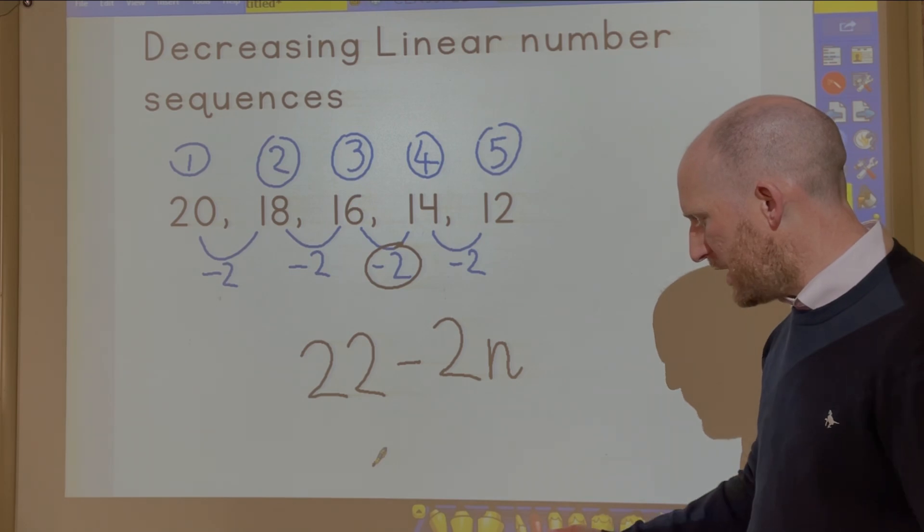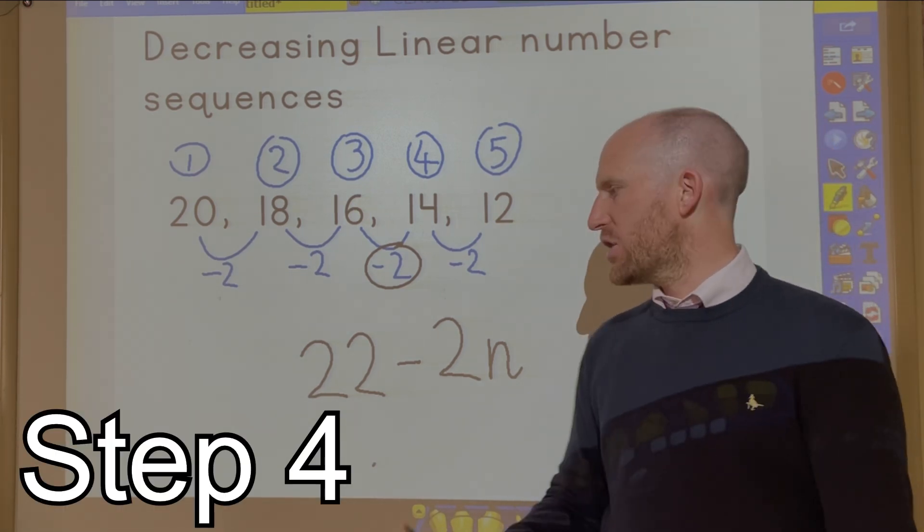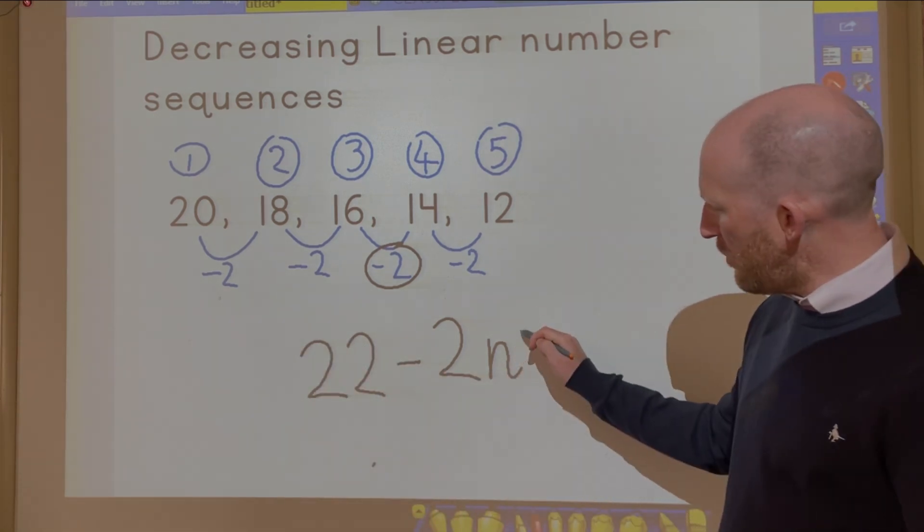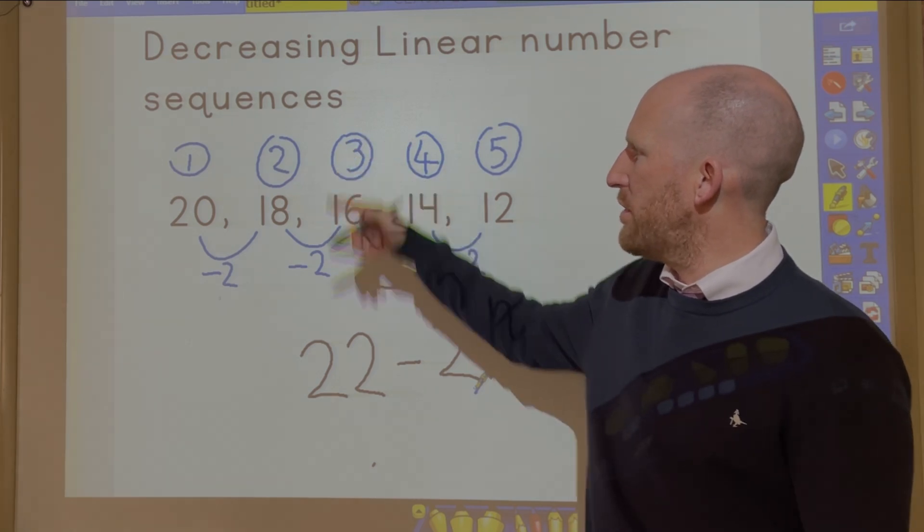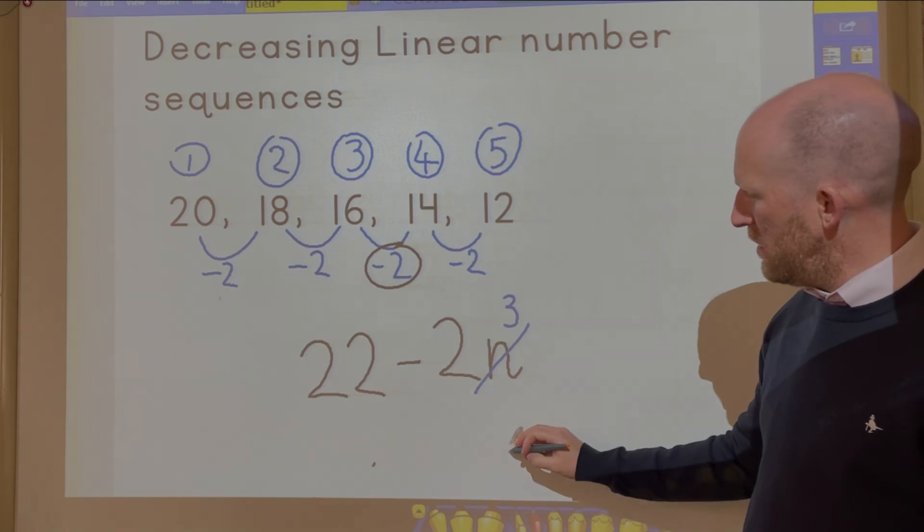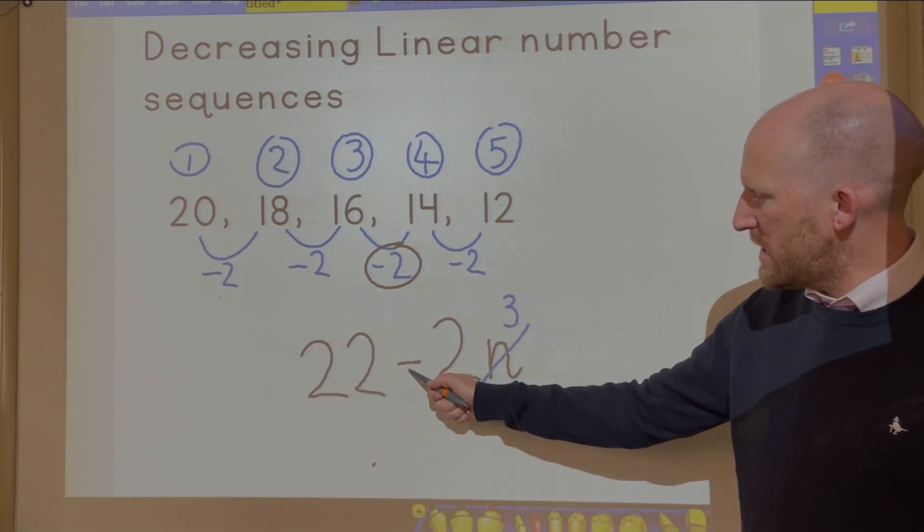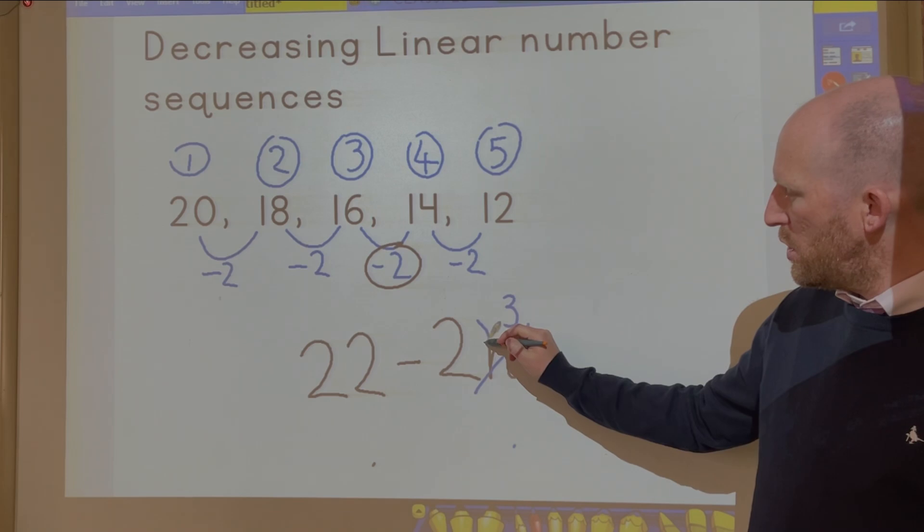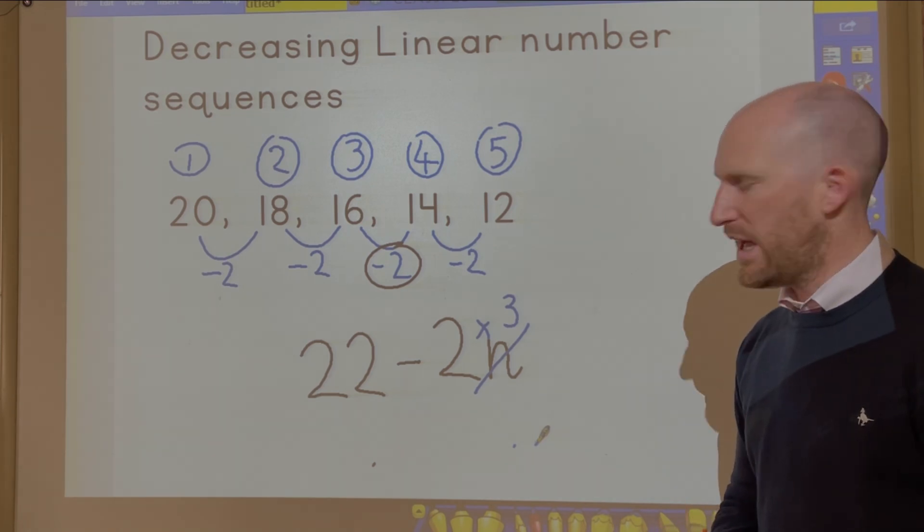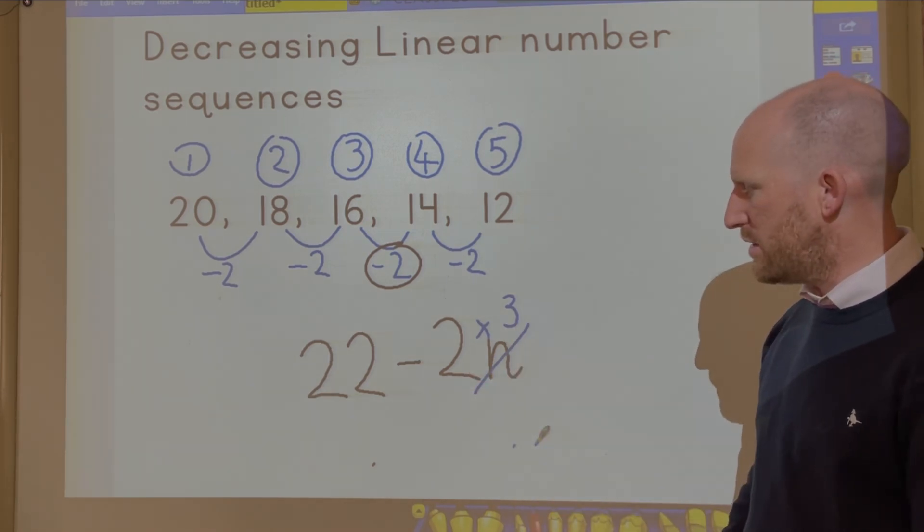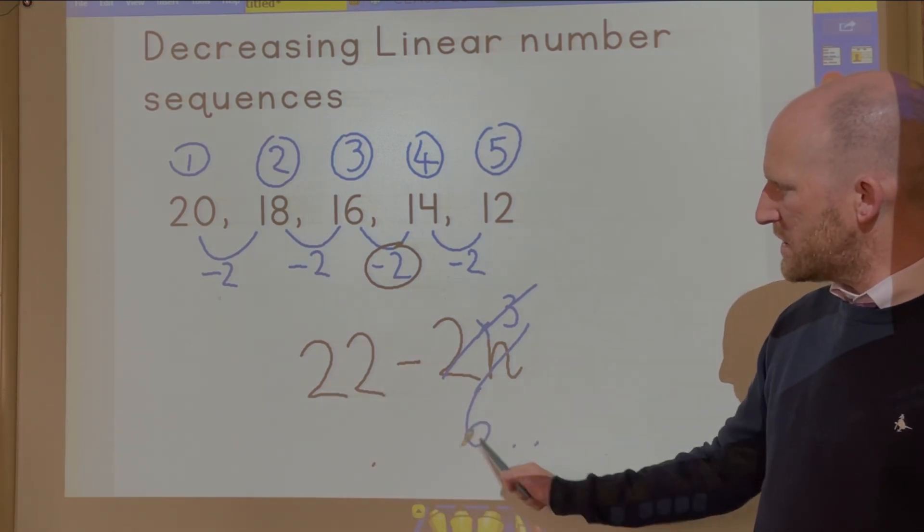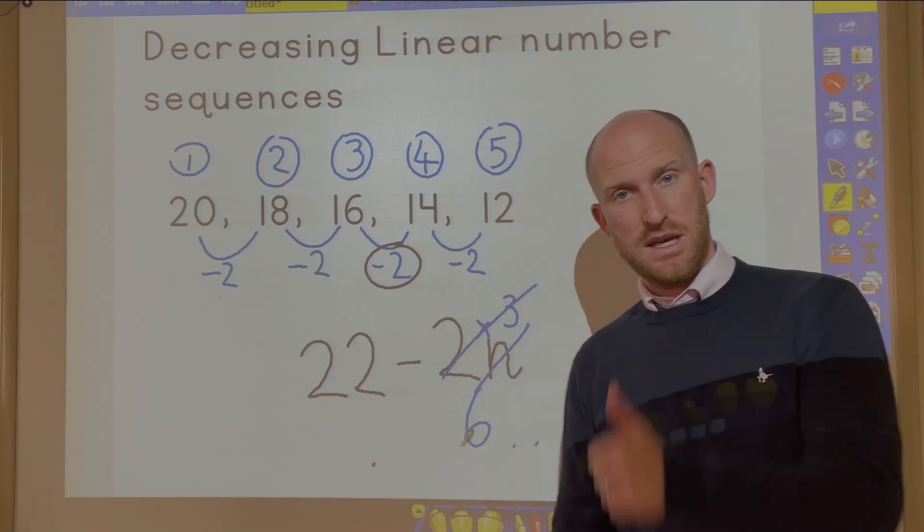And then your final step is then to check to see that it actually works. So if I have a starting number of 22 and I replace n with, let's test number 3. If I replace n with 3, I will be doing 22 take away 2 multiplied by 3. Because if you have a number next to a letter, hopefully you have learned in algebra that you must multiply them together. So 2 times 3 makes 6. 22 take away 6 is 16. That's correct.